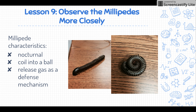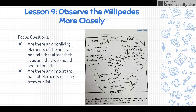They look creepy crawly, but they don't bite and they're very gentle creatures. They have some behaviors to help defend themselves: one is coiling into a ball, like you see in the picture on the far right, and they can also release a gas that is poisonous to certain predators. At the end of lesson 9, after more millipede observations, you'll refer back to the triple Venn diagram and start to discuss the things that are common throughout all of the habitats, cross them out, and put them in the middle of the Venn diagram. There are focus questions to help guide this conversation.